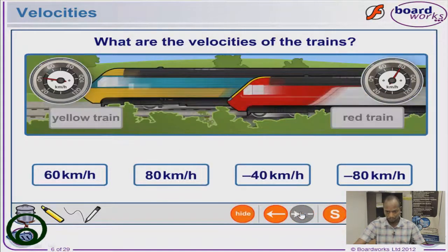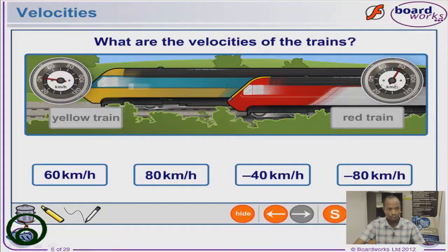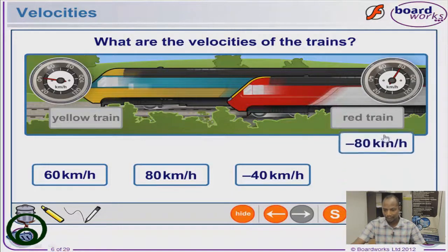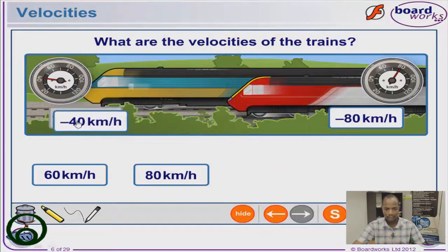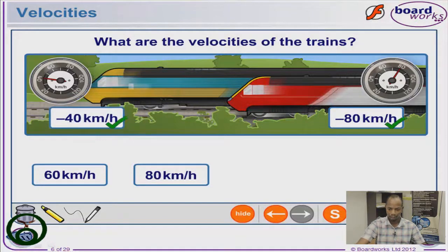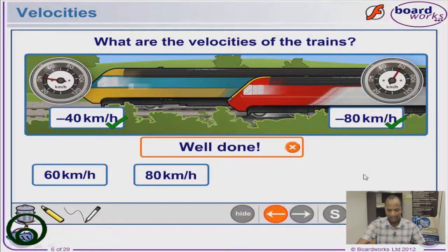Now let's look at a scenario where both trains are going in the negative direction — towards the left. Both trains have negative signs. Train A's speedometer shows 80 kilometers per hour going left, so it's minus 80. Train B's speedometer shows 40 kilometers per hour going left, so it's minus 40. We check our answers and confirm we are right — this is very good.